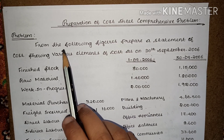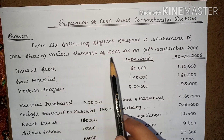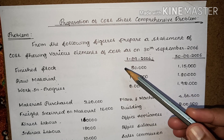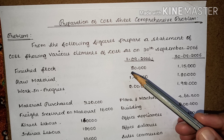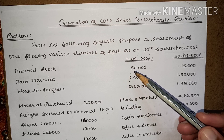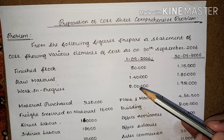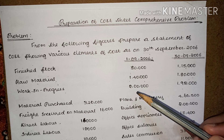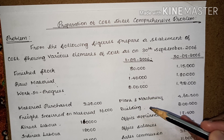In this problem, they have given — from the following figures, prepare a statement of cost showing various elements of cost as on 30th September 2006. So they have given many items regarding the preparation of cost sheet. The first thing you have to do before going into the solution is to identify which items will come under what head, so that you will not leave any items and can finish the problem very fast.